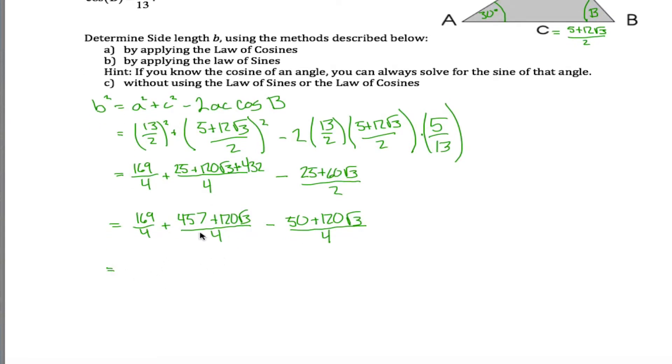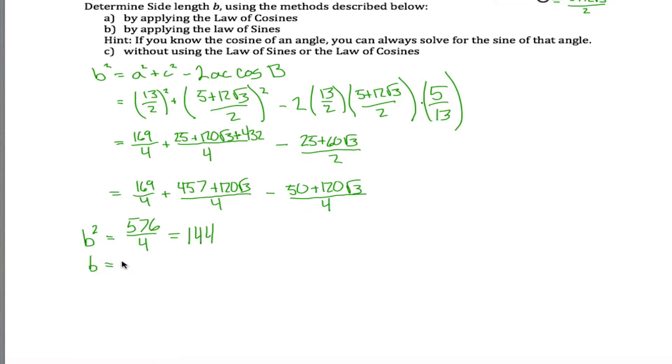Now I can add all those together. How convenient. 120 root 3 minus 120 root 3, those will cancel each other out. 169 plus 457 minus 50. I'm going to pull out a calculator. 169 plus 457 minus 50 is 576. So this all just becomes 576 divided by 4. But 576 divided by 4, my calculator tells me is 144. So what I have is that b squared is 144. Therefore, b is just 12.